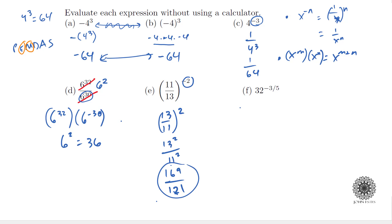The last example has both a negative and a fractional exponent. The rule is: x^(n/m) means the mth root of xⁿ — in other words, it's the mth root of x raised to the nth power. You can choose which operation to perform first, taking the root or applying the power.